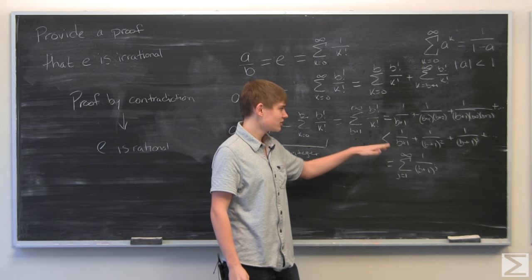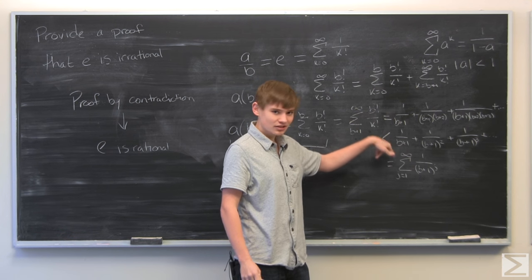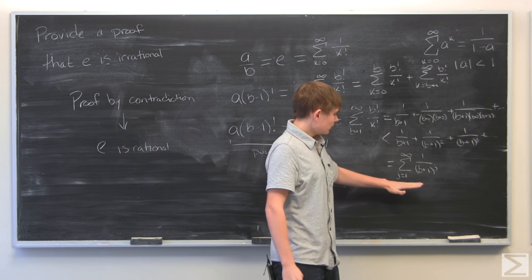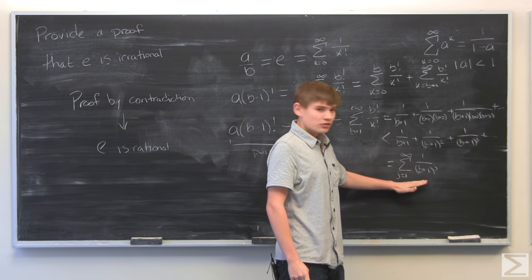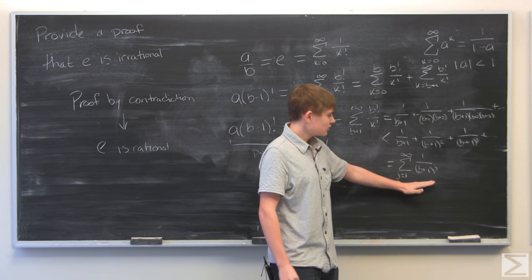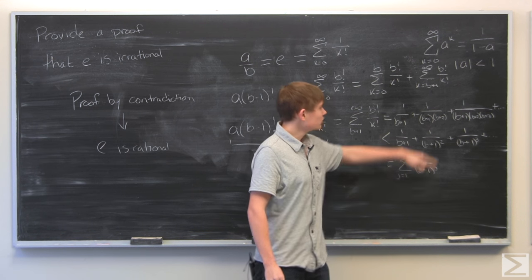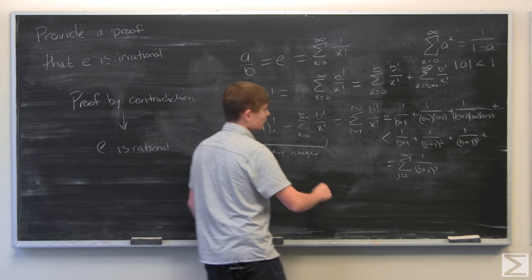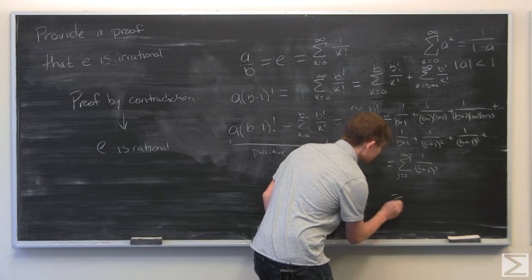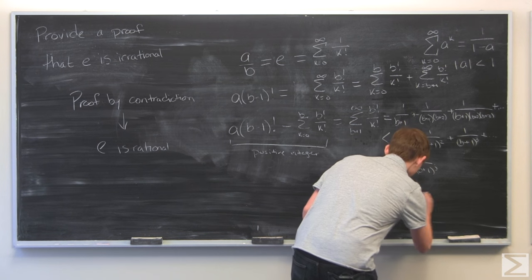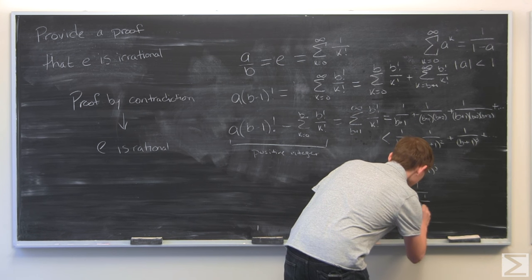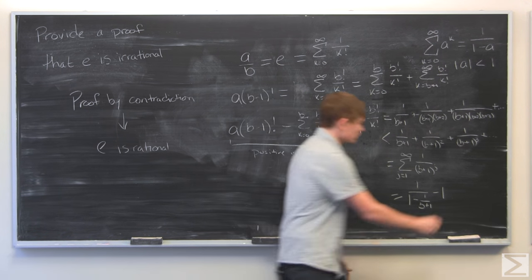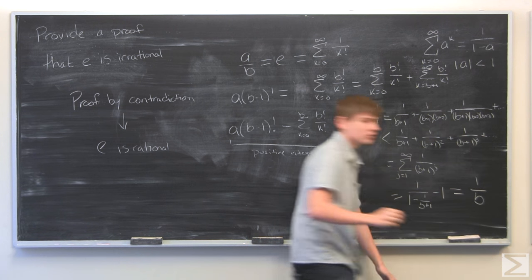That's what I mean by this isn't going to be rigorous. I'm not going to actually show that this is always greater. I'm just going to leave that to your intuition. And then we write it in sum notation. And since this is a geometric sum, we can use this formula up here for the geometric sum and write it out more simply. And this is equal to this, which simplifies to 1 over b.